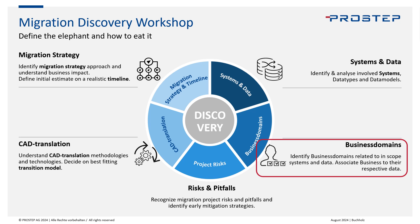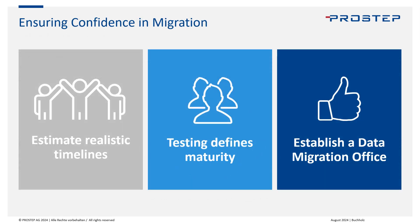Today we want to talk about business domains — anything that makes the business domain comfortable going into the actual migration in the end. That's our main focus for today. We will split that up into three different topics: first, giving good and realistic timelines; second, testing defines maturity; and third, establishing a data migration office.